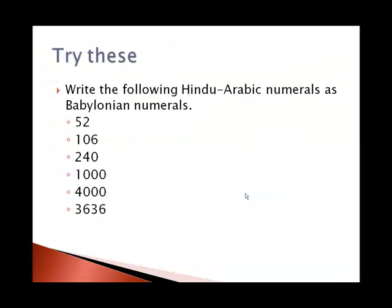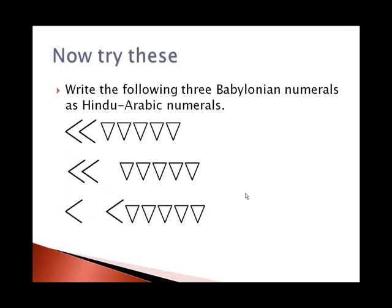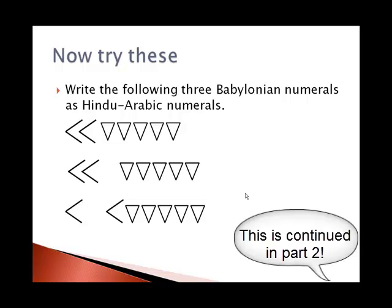Now I'd like to go the other way. Here are some cuneiform numbers, numerals, that I'd like you to write the Hindu-Arabic versions of. So here's three different things in three different rows. You can pause this here.